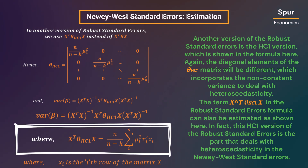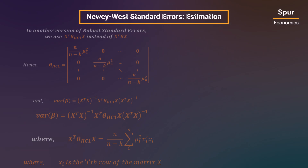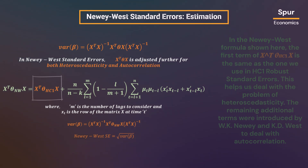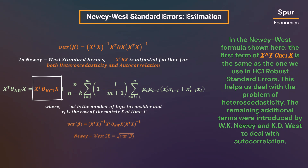The term X-transpose theta-HC1 X in the robust standard errors formula can also be estimated as shown here. In fact, this HC1 version of the robust standard errors is the part that deals with heteroscedasticity in the Newey-West standard errors. In the Newey-West standard errors, we further adjust the theta matrix and the term X-transpose theta X to deal with autocorrelation in addition to heteroscedasticity. In the Newey-West formula shown here, the first term of X-transpose theta-HC1 X is the same as the one used in the HC1 robust standard errors.